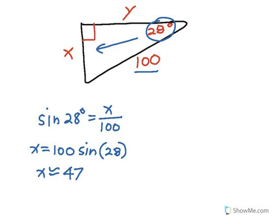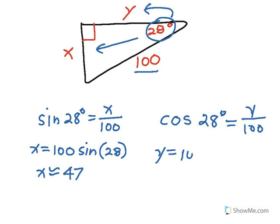To find Y using that same 28 degree angle — Y is adjacent to the 28 degree angle, so I can use the cosine function. The cosine of 28 degrees is equal to Y over 100. Multiplying both sides by 100 to solve for Y, I get Y is equal to 100 times the cosine of 28 degrees. My calculator will do this for me if I enter 28 for the number of degrees. So Y is approximately 88 units in length.